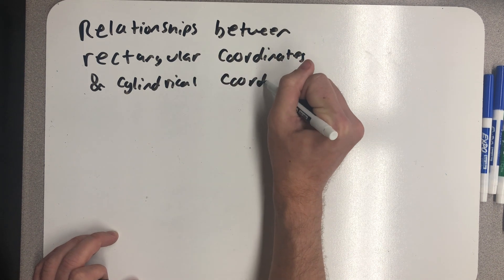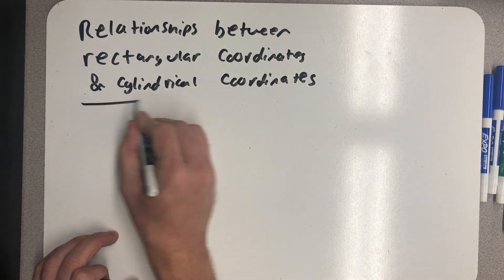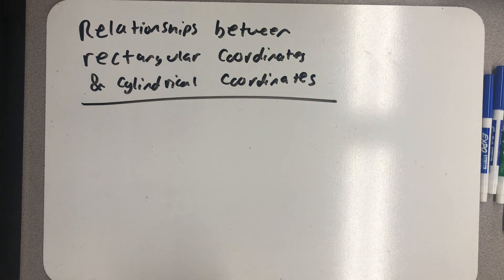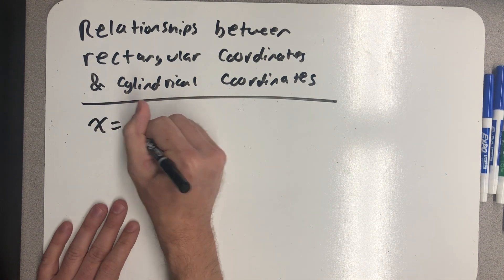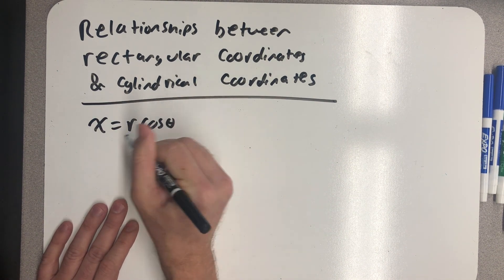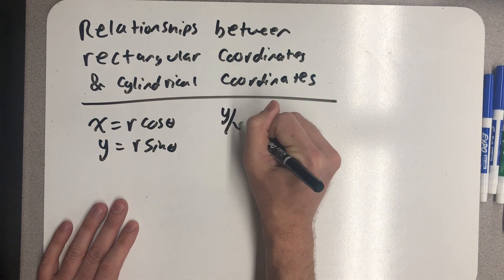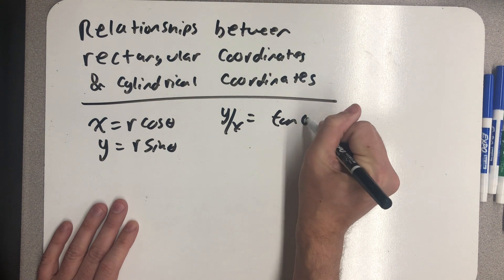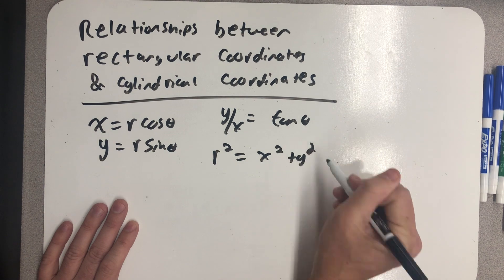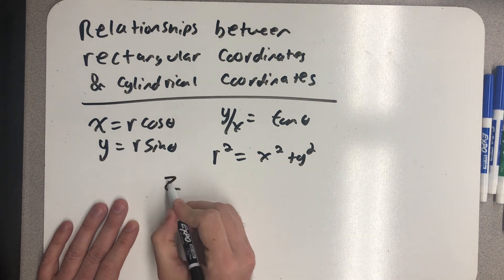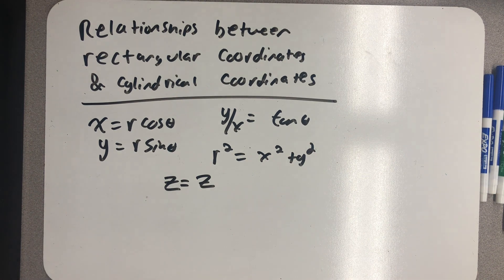The good news about these relationships is they're really just the relationships between rectangular and polar coordinates with one additional piece of information. So x is r cosine theta, y is r sine theta, y divided by x is tangent theta, and then r squared is equal to x squared plus y squared. And finally, the one piece of new information was z is equal to z. Not very interesting.